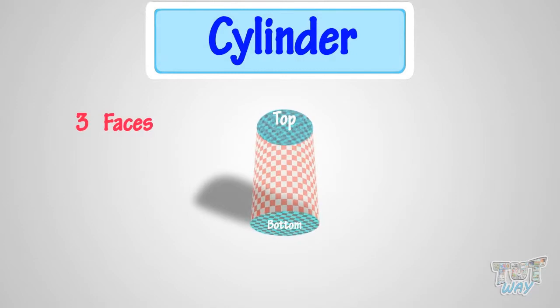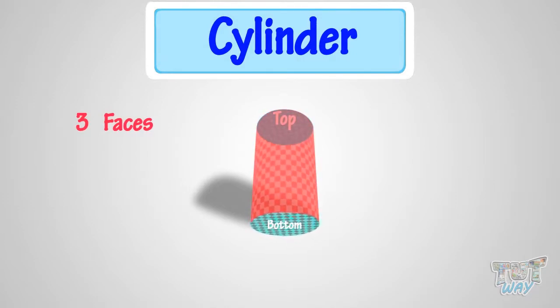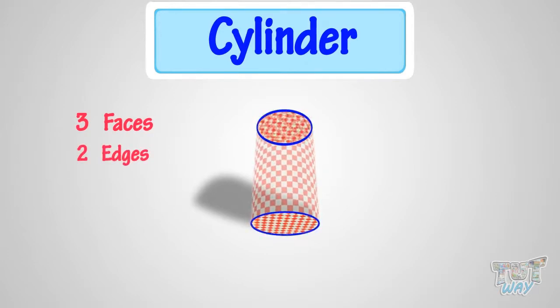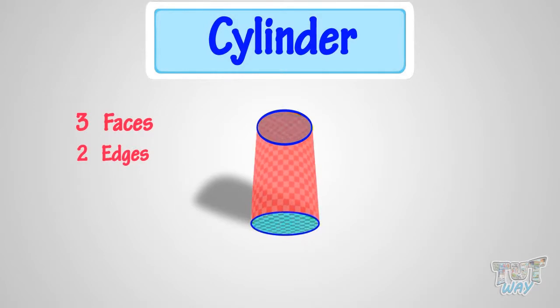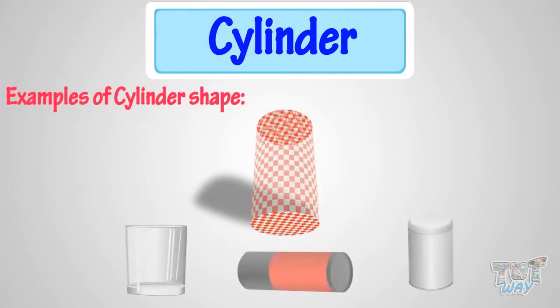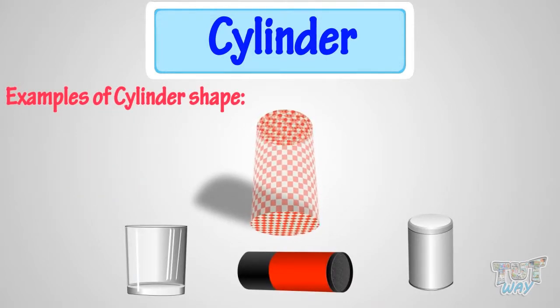And third face is its curved surface. It has two edges, which are round in shape, three faces and no vertex. These are a few objects which are cylinder in shape.